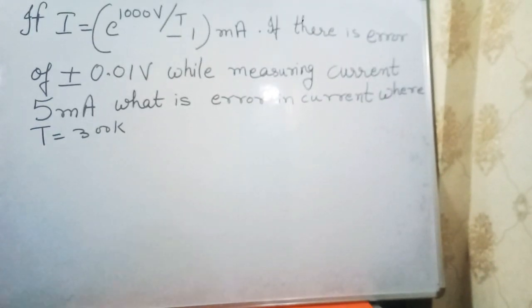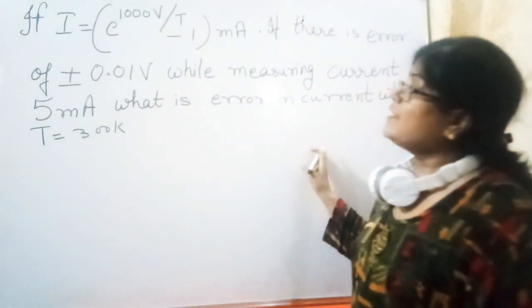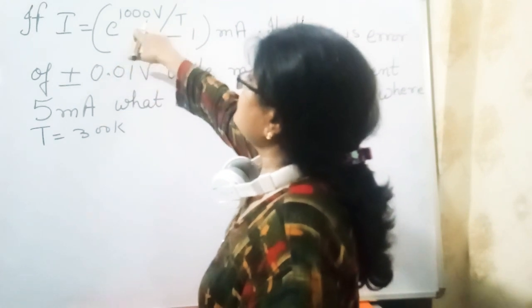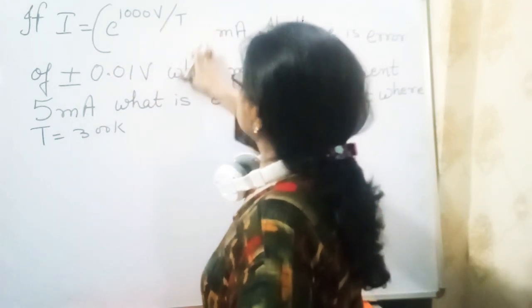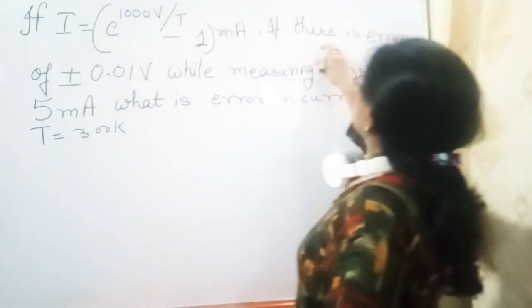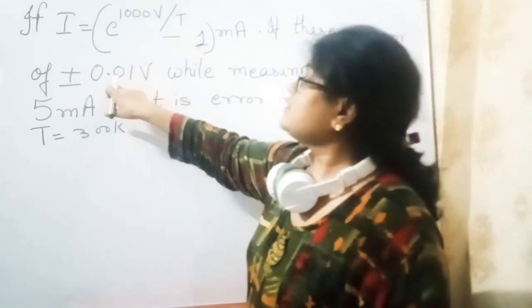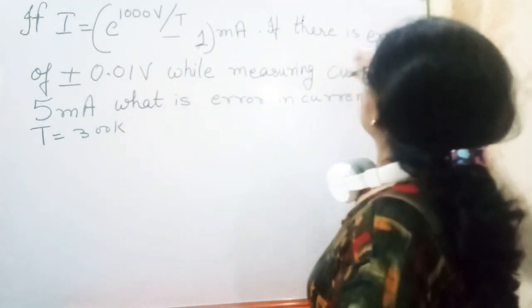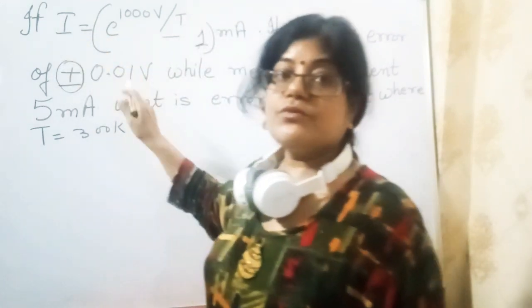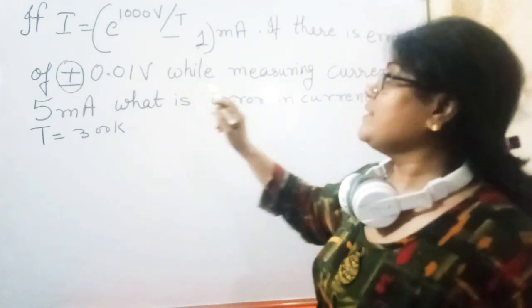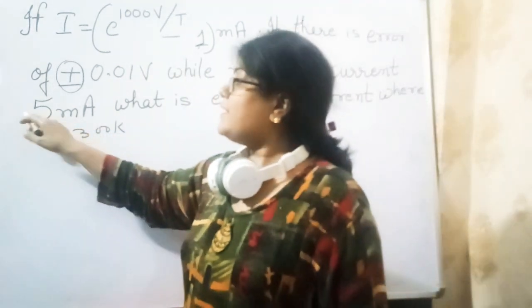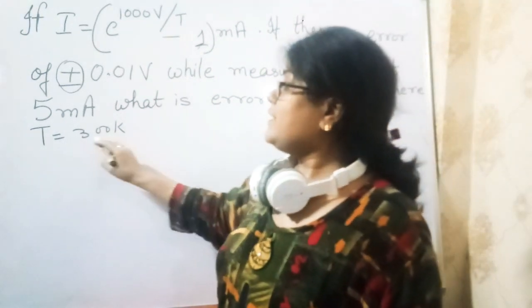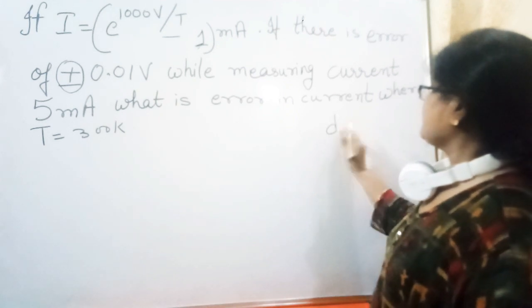Now see this type of question - seems a little tougher with exponential E. If I equals E to the power (1000V over T) minus 1, and there's error of 0.01V while measuring current 5 milliampere, what is the error in current where T is 300K? Delta V is 0.01, current I is 5 milliampere, temperature is 300K. V is not given - this is error analysis.